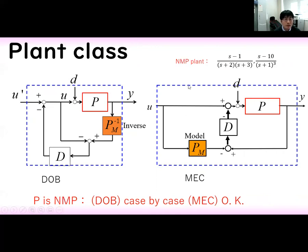Next, we show the case of non-minimum phase plant. Non-minimum phase plant is given like this. In this case, the inverse system is unstable, so it is difficult to make a disturbance observer for non-minimum phase systems.